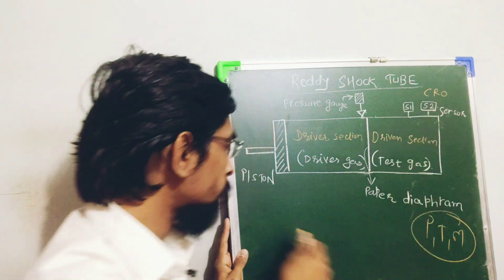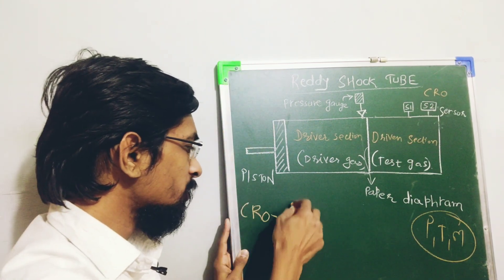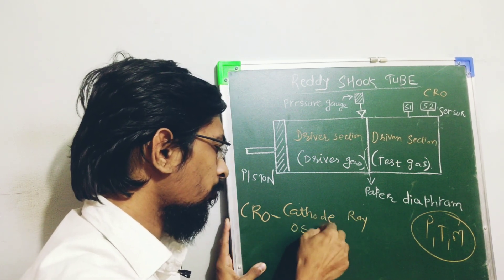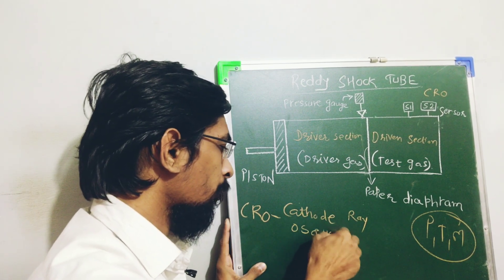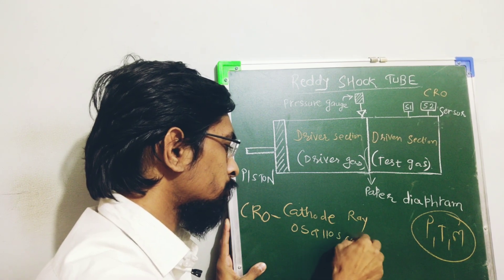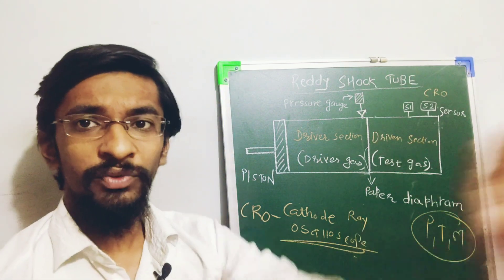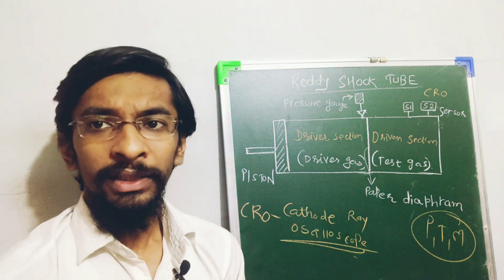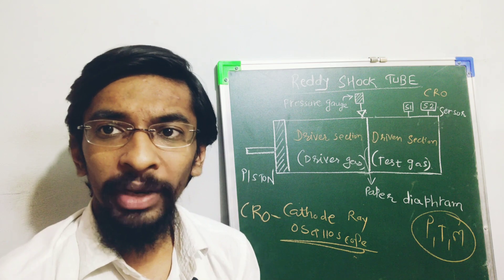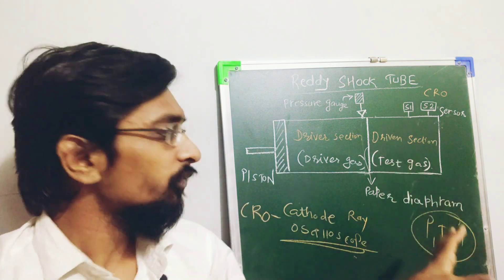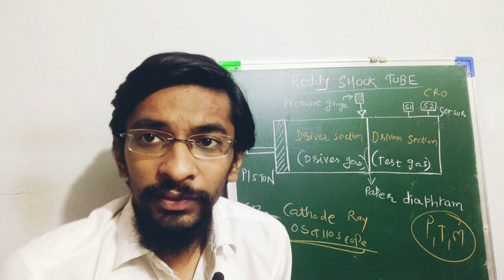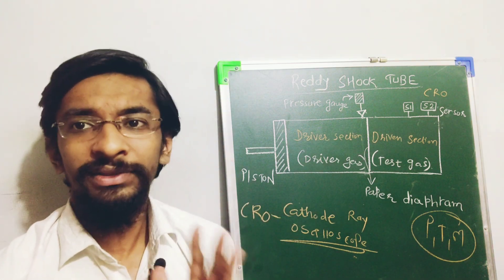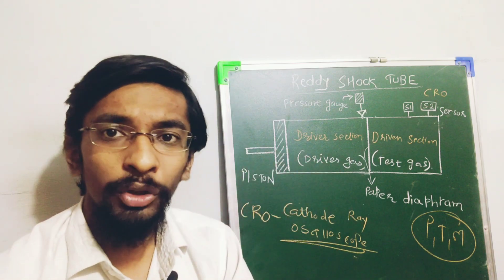So this oscilloscope, this CRO, which is termed as the cathode ray oscilloscope, helps us to find out the parameters like pressure, temperature and when we apply the expression of Mach wave in the fluid medium and so on, we will get the Mach number of the Mach wave generated by the hand driven device, which is the ready shock tube.